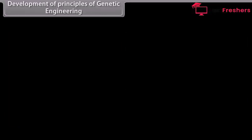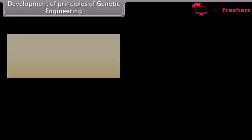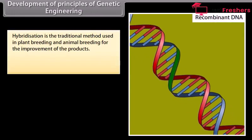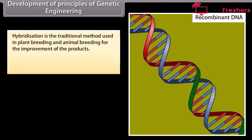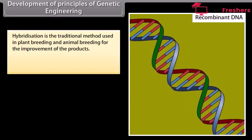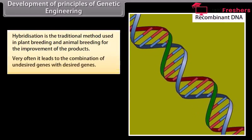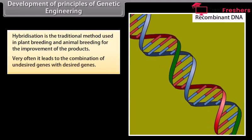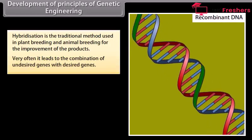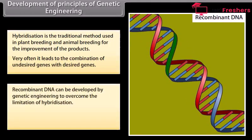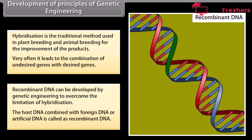Development of principles of genetic engineering. Hybridization is the traditional method used in plant breeding and animal breeding for the improvement of products. Very often it leads to the combination of undesired genes with desired genes. Recombinant DNA can be developed by genetic engineering to overcome the limitation of hybridization.